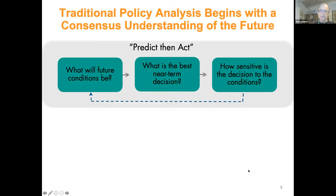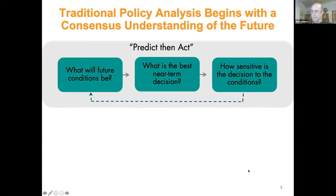Traditionally, policy analysis begins with a consensus understanding of the future — that can be a point forecast, but more properly a joint probability distribution over an agreed set of future states of the world. Once we have that consensus understanding, we can rank different decision options by expected utility or some type of metric, and then perhaps do some sensitivity analysis to decide how sensitive our recommendations are to the uncertainties. We call this 'predict, then act.'